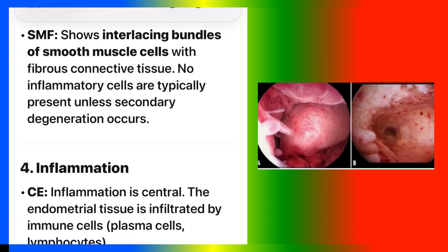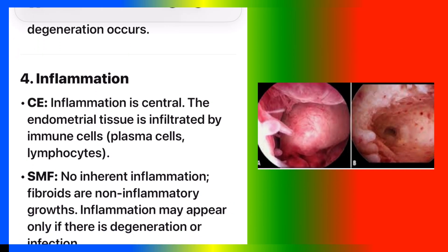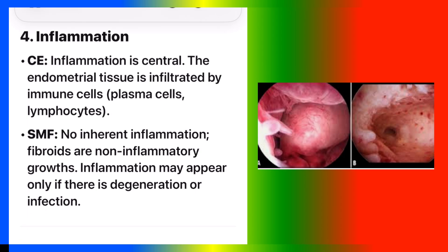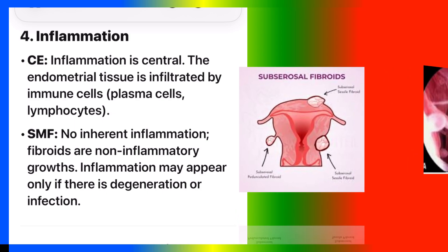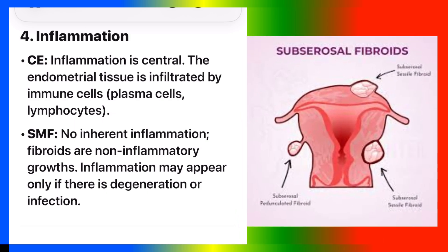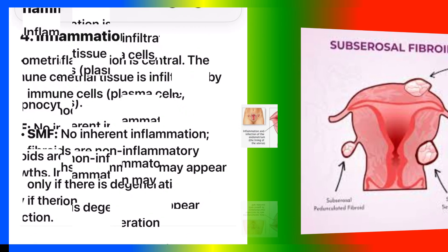Number four: inflammation. In CE, inflammation is central. The endometrial tissue is infiltrated by immune cells — plasma cells and lymphocytes. In SMF, there is no inherent inflammation. Fibroids are non-inflammatory growths. Inflammation may appear only if there is degeneration or infection.